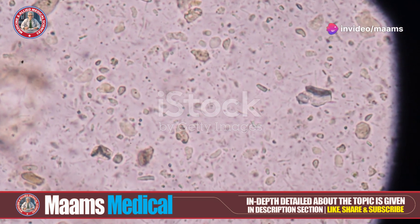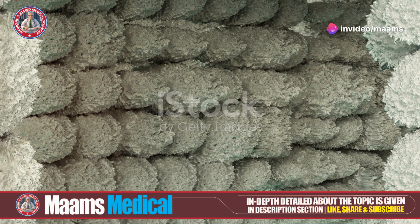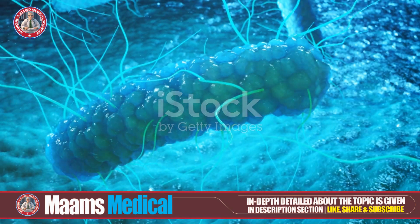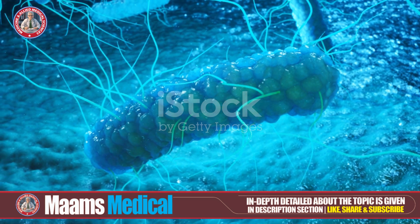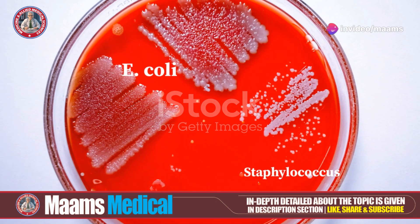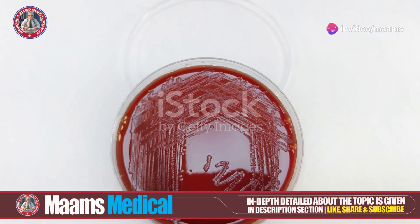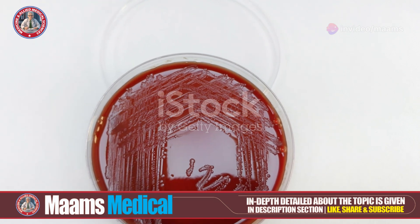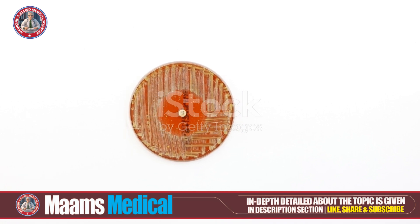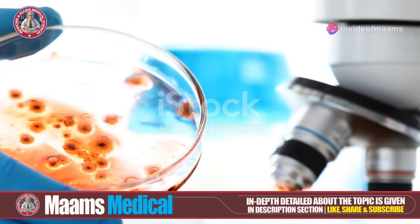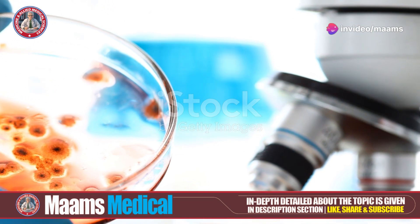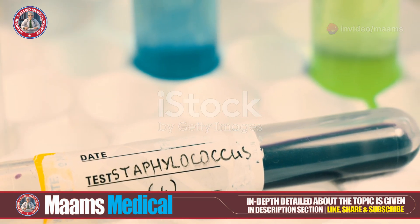Now let's talk morphology. Staphylococcus bacteria are spherical or cocci and form clusters due to their division in multiple planes. They are gram-positive, appearing purple under a microscope after gram staining. When it comes to growth characteristics, Staphylococcus bacteria are both aerobic and facultatively anaerobic, meaning they can grow with or without oxygen. They thrive best at temperatures between 30 to 37 degrees Celsius. On solid media like blood agar, colonies usually appear smooth, round, and often golden yellow, especially for S. aureus.